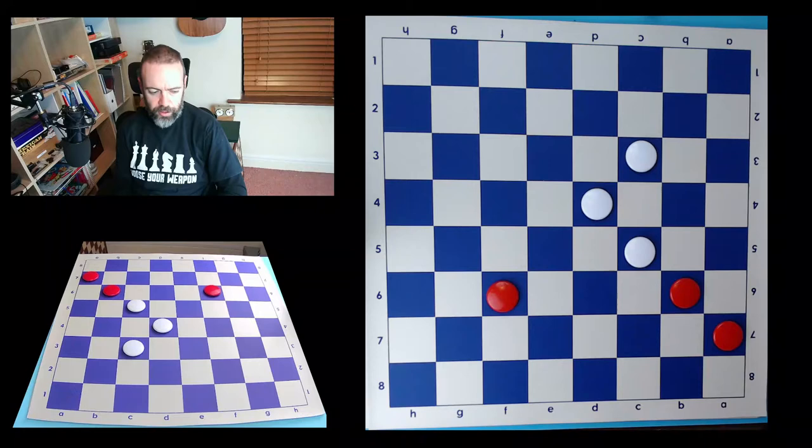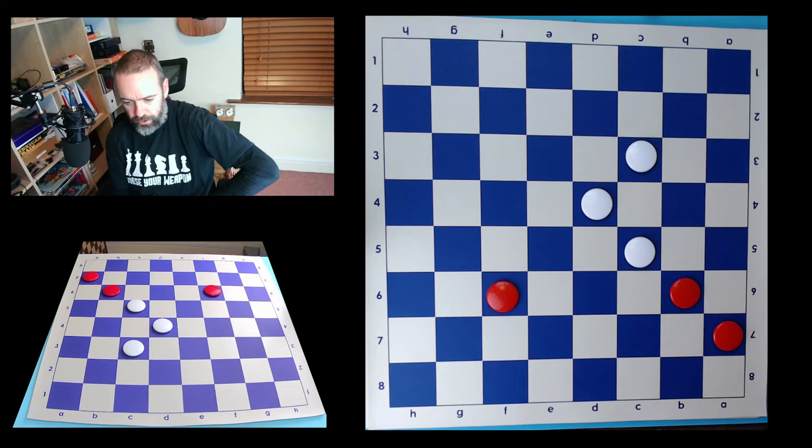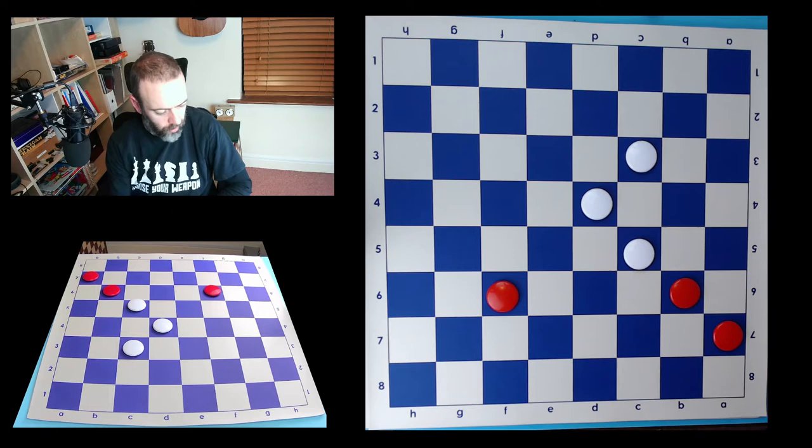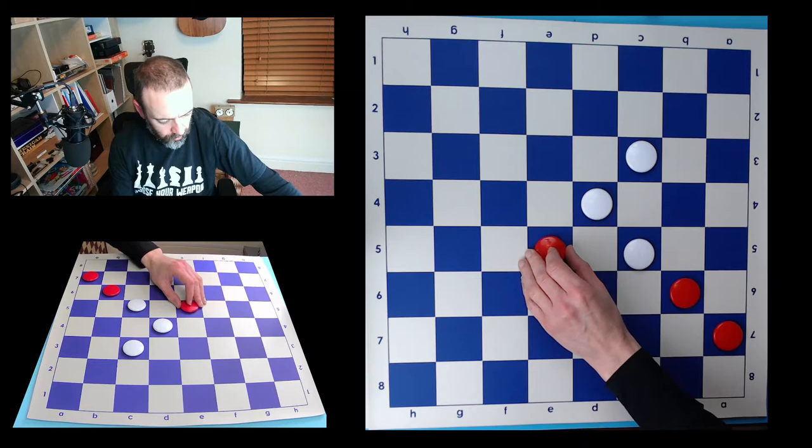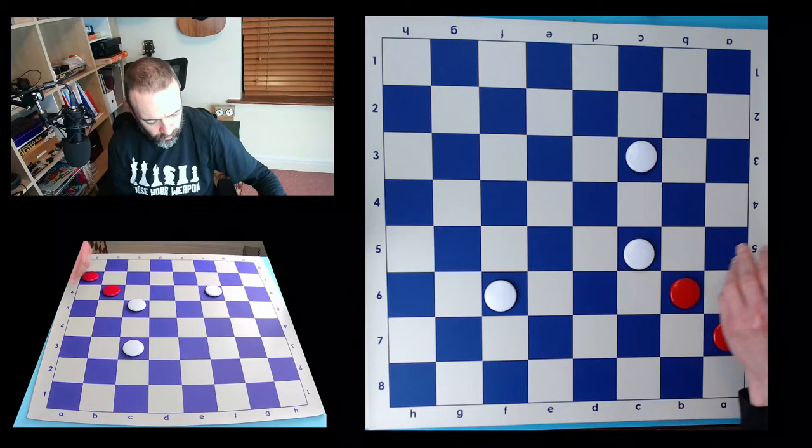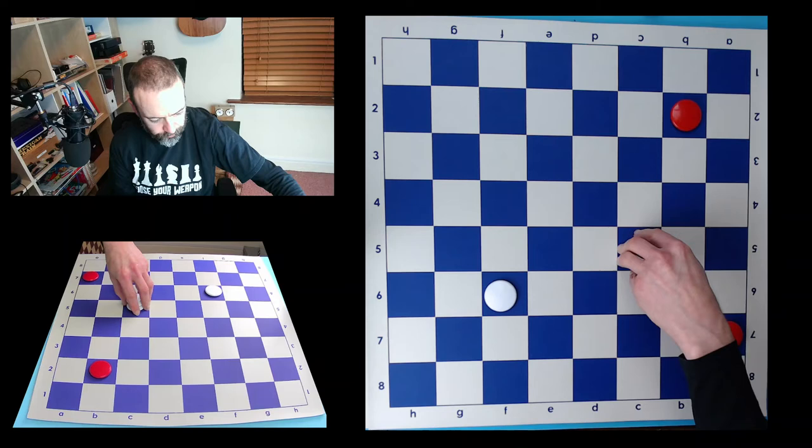This positional shape here is called an elbow because it looks like an elbow of an arm bent. Now, red has the chance to win these two pieces by breaking open the bend of the elbow by sacrificing this piece. Again, white is stuck in the mandatory capture. He has to capture. And now red captures the two pieces.